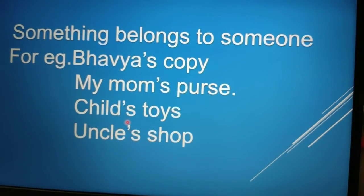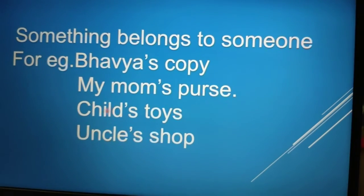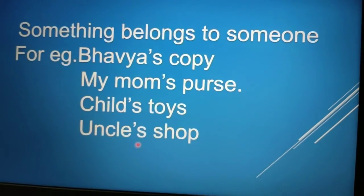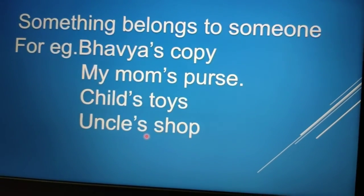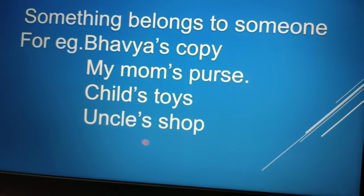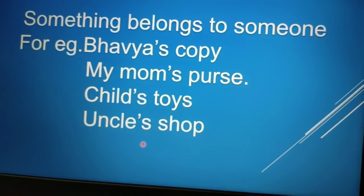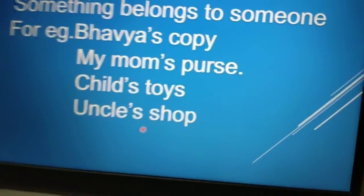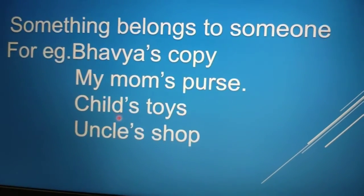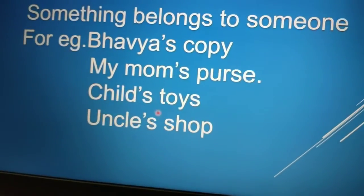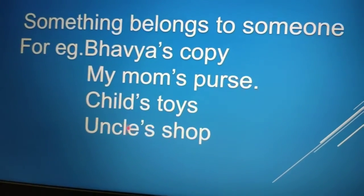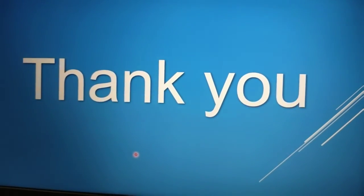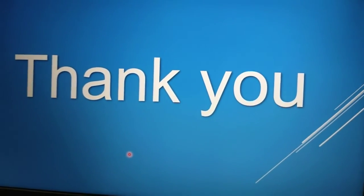This comma shows possessive. Next example: uncle's shop — means whose shop? Uncle's shop. So again, to show the possessive we use an apostrophe comma. This comma is called an apostrophe. I hope you have understood this. Thank you and have a nice day.